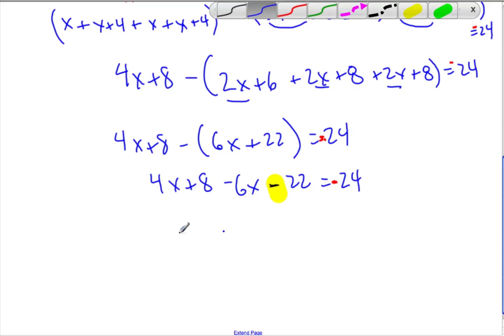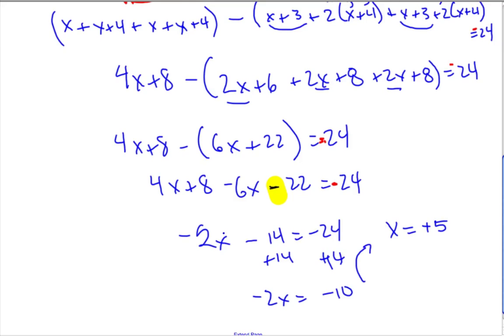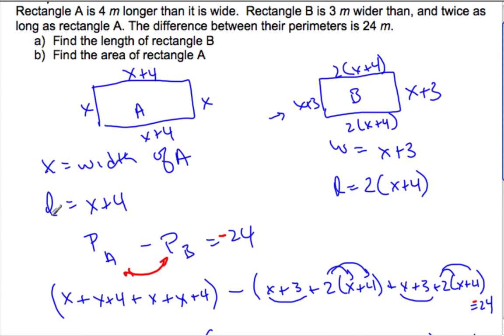So let's put these together. I get negative 2X minus, what's that, 14? Yep. It was negative 24. I'm going to add the 14. So negative 2X is negative 10. And so X equals positive 5 when I divide by 2. So there's my X equal to 5. And if we use what we have here, that means that my width is 5 of A. My length, I plug 5 in, is 9. My width for B, 5 plus 3 is 8. And my length will be 5 plus 4 is 9. Times 2 is 18.